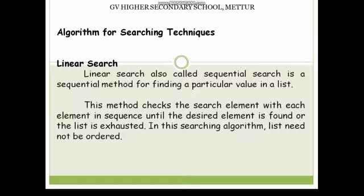What do we know about searching? So, what do we know about data structures — that means array, list, queue, etc. Searching means finding one particular element in a set of data. There are a lot of searching techniques. In our syllabus, there are two examples: linear search and binary search.